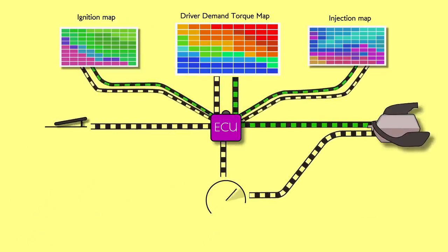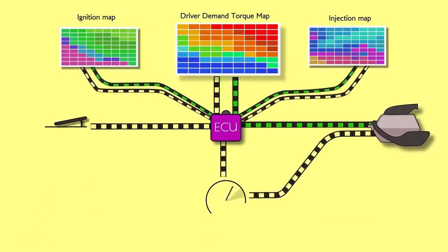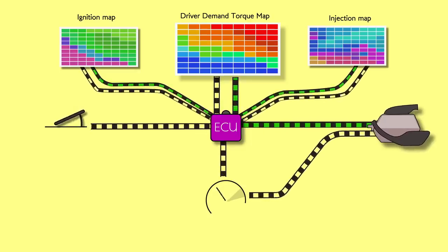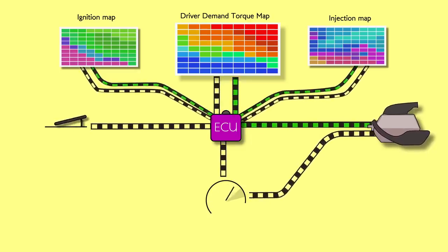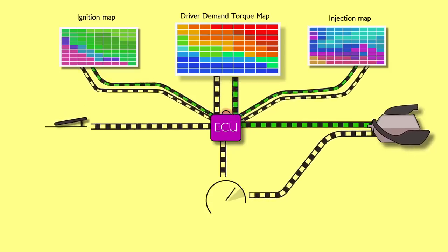So via the ignition and injection maps, the ECU looks at the driver demand map, it looks at the current state of the engine, it looks at other inputting factors like temperature, fuel mix, and works out the exact combustion settings to meet the torque demands. It sounds complicated but it all happens incredibly smoothly.